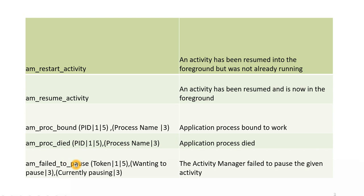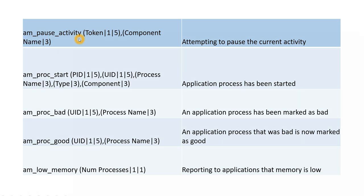`am_fail_to_pause` — the activity manager failed to pause the given activity. When we call pause, the particular activity is actually sent to the background, so when that action fails and we are not able to send our app or activity to the background, this log will be logged in your event logs. `am_pause_activity` — attempting to pause the current activity. `proc_start` — application process has been started, along with process name and other components.